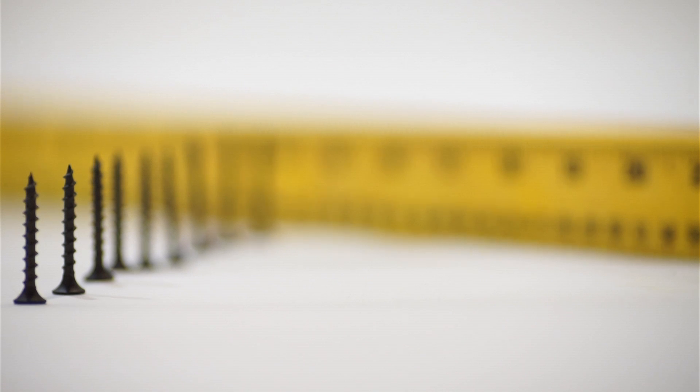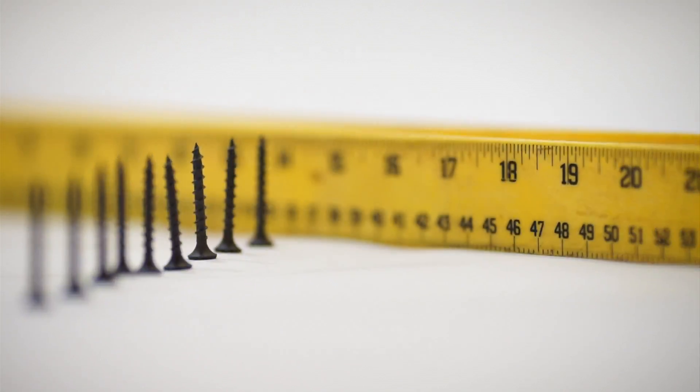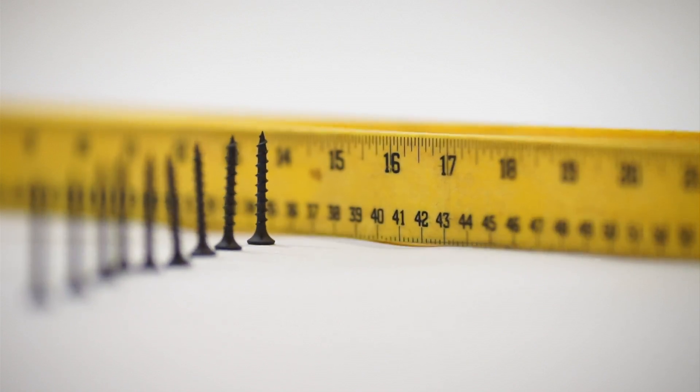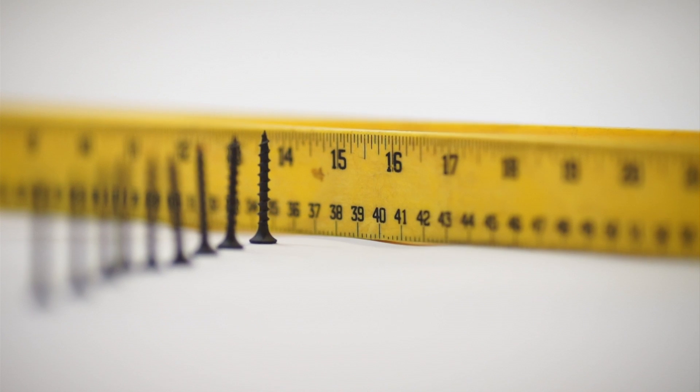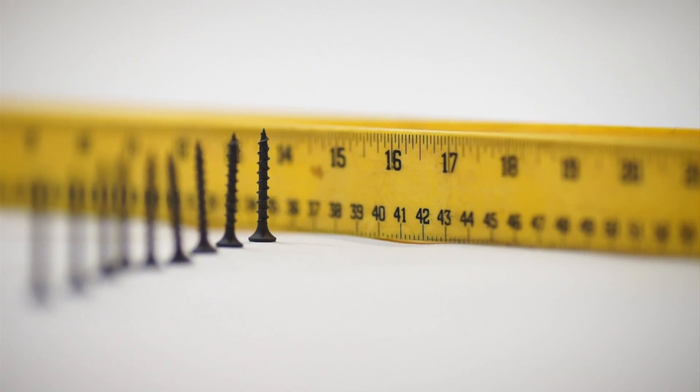So I got my camera set up in aperture priority mode. I just want to show you what it looks like when I walk through the depth of field here. So I'm just going to turn the focus ring and I'm going to walk through. And now you can start to see the numbers come in.